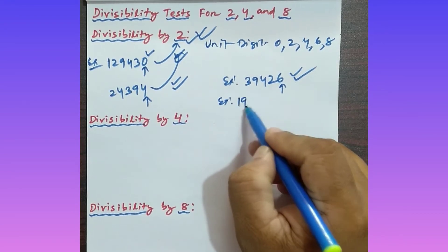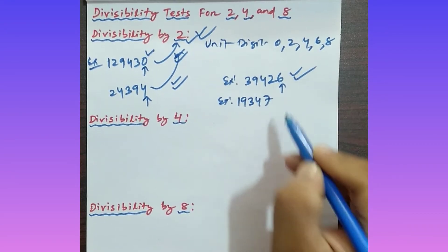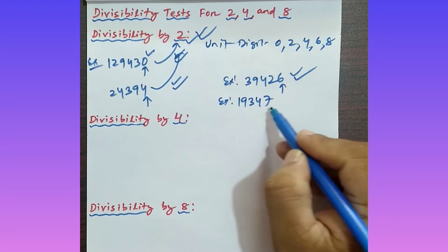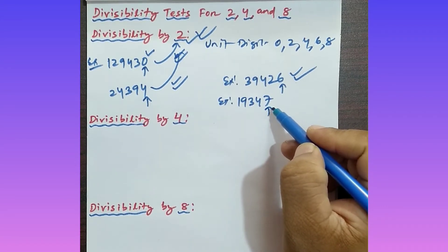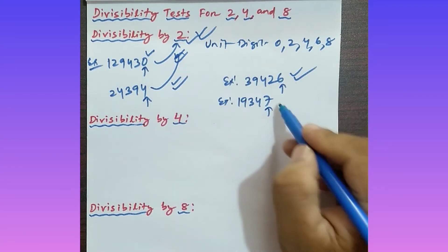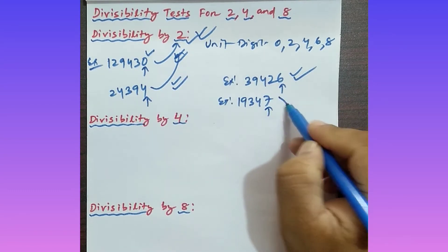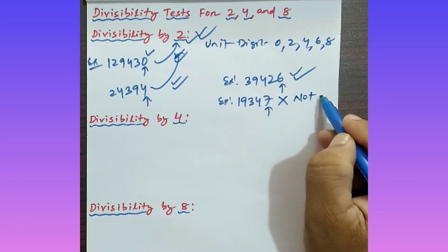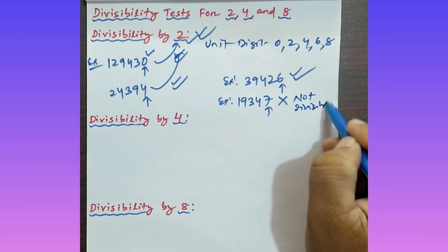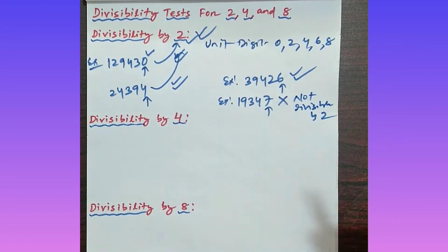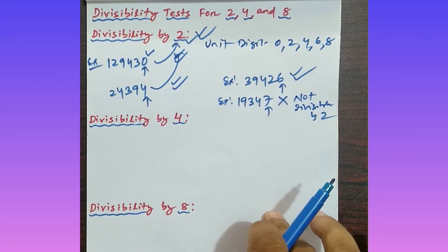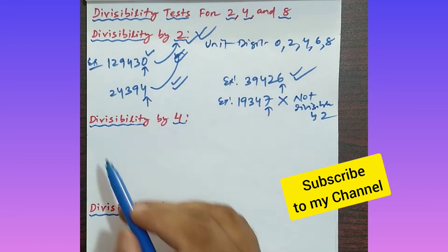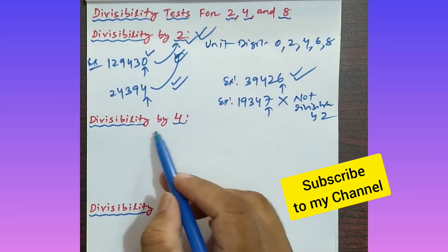One more example: 19347. The unit digit is 7. Since 7 is not in the set 0, 2, 4, 6, 8, this number is not divisible by 2. Now let's look at the next rule — divisibility by 4.